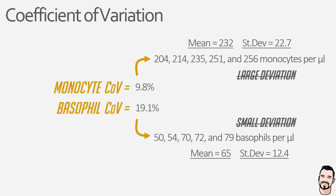Essentially, when the mean values of two data sets are vastly different, it can make comparisons using the standard deviation very unreliable, because when values are large, the standard deviation value will naturally be much bigger. Therefore, by calculating the coefficient of variation, it takes into account the size of the mean value, making the comparison of different data sets with vastly different mean values not only possible, but meaningful.